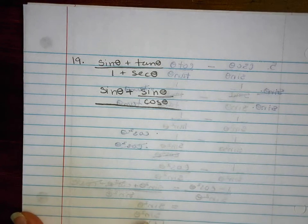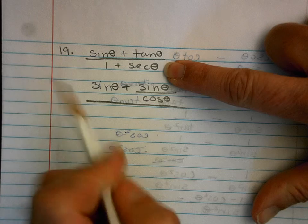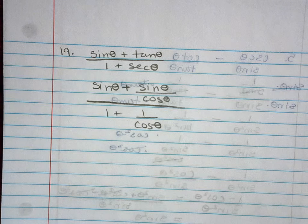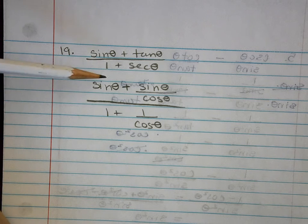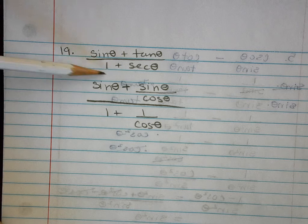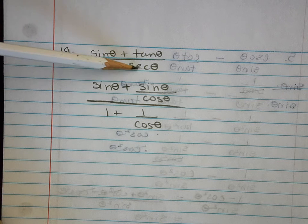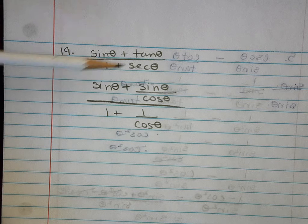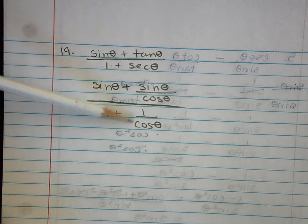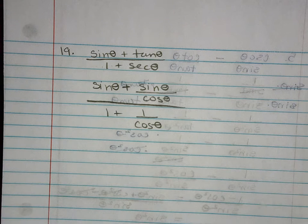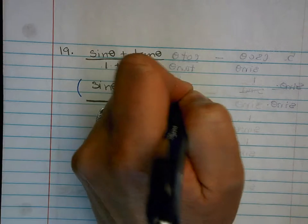And then I'm going to rewrite secant as 1 over cosine. I could split my fraction — make this be sine over 1 plus secant and tangent over 1 plus secant — but I don't see how that's helpful. I know I could replace 1 with sine squared plus cosine squared, but then it doesn't really combine or cancel with anything here. So I'll just use my reciprocal definition for secant and my quotient definition for tangent. Now I have a complex fraction, so I'm going to clear that by multiplying the top and the bottom by cosine.